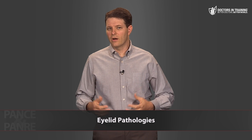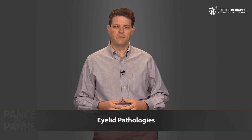Two other eyelid pathologies to recognize are ectropion and entropion. Ectropion is where the lid margin is turned out away from the eye so that the conjunctival surface is exposed, and can result from age, trauma, or infection. Entropion is where the lid margin turns inward due to chronic inflammation or scarring, turning the eyelashes inward so they rub against the eye and cause irritation and injury. Either condition can be treated surgically.